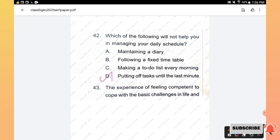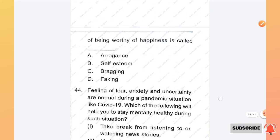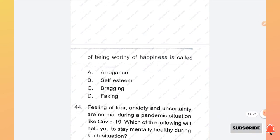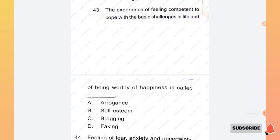Question number 43: The experience of feeling competent to cope with the basic challenges in life and of being worthy of happiness is called: arrogance, self-esteem, bragging, or faking. The right answer is option B, self-esteem.